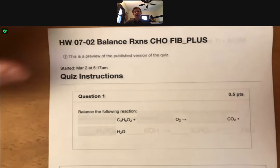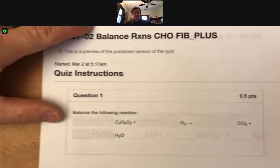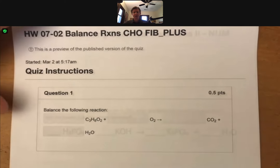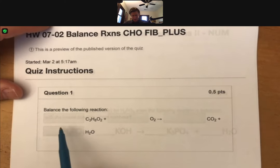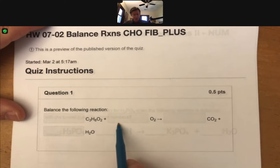Let's work on this problem for balancing reactions. The problem is to balance the following reaction: C3H8O2 plus oxygen, with lines where you're going to put in your answers for the coefficients, reacts to produce carbon dioxide plus H2O.